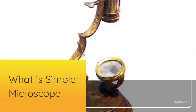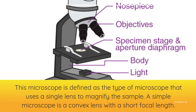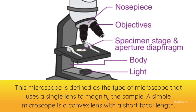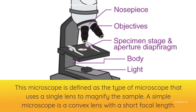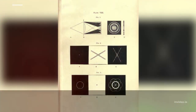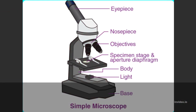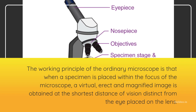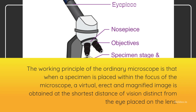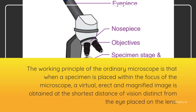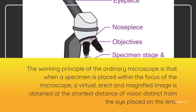What is Simple Microscope? This microscope is defined as the type of microscope that uses a single lens to magnify the sample. A simple microscope is a convex lens with a short focal length. The working principle of the simple microscope is that when a specimen is placed within the focus of the microscope, a virtual, erect and magnified image is obtained at the shortest distance of vision distinct from the eye placed on the lens.